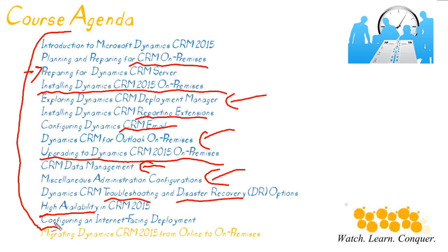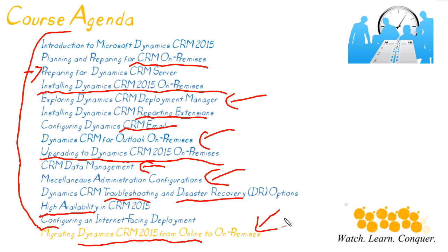This bottom agenda item is not part of this course — it's part of the CRM Online 2015 Management and Configuration course. If you currently have a Dynamic CRM 2015 online installation and you're thinking about bringing it on-prem, you'll want to pop out to that course and look at that nugget to understand the steps involved in moving from online to on-prem. So let's begin by looking at what Microsoft Dynamics involves.